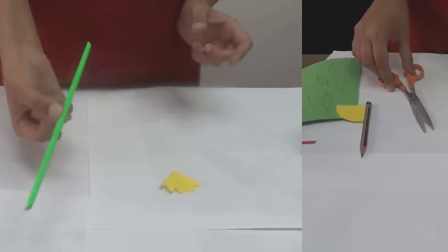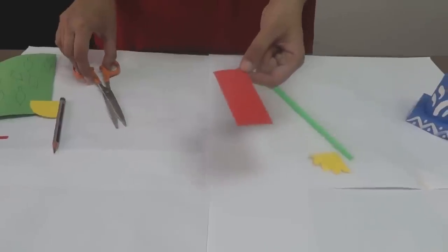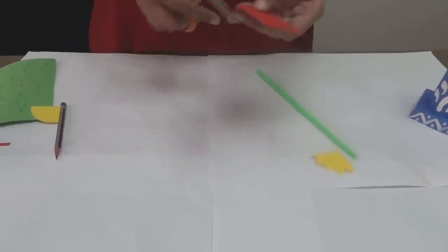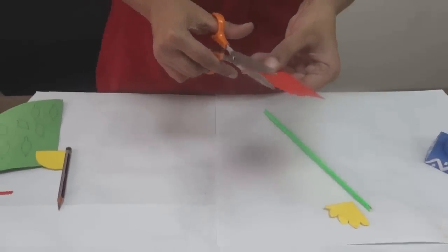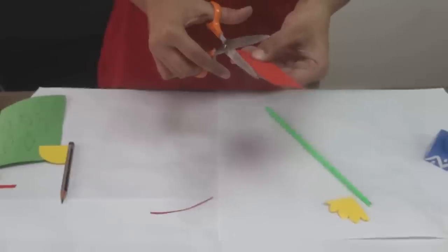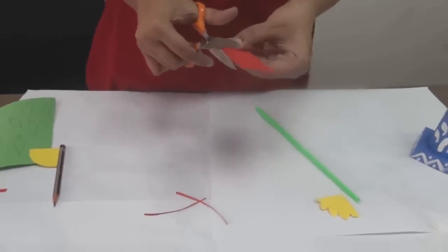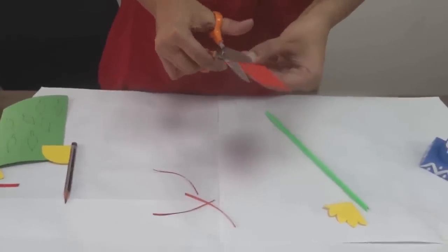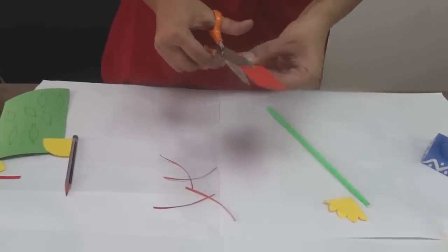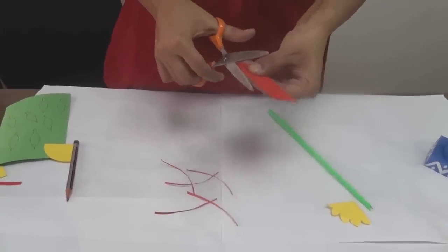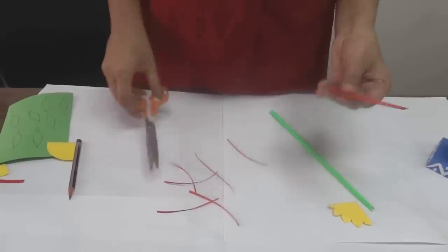You will get the stem. Take another colored piece of sheet and cut thin strips using scissors to make the stem of our flowers. These thin strips. I think these will be enough.